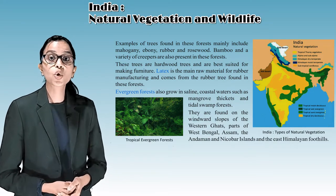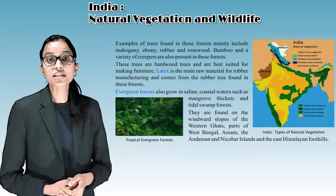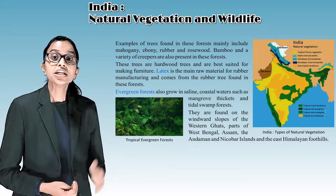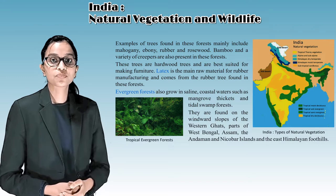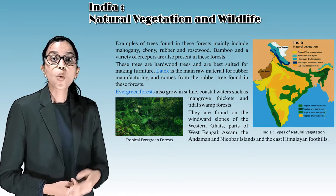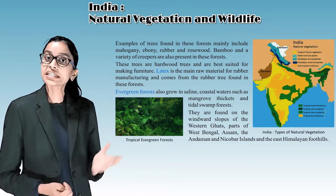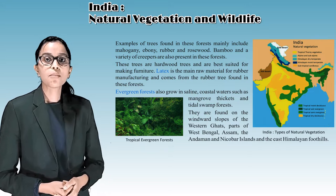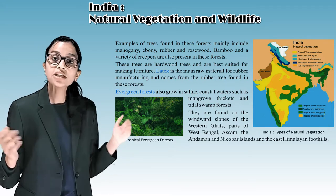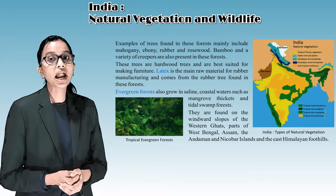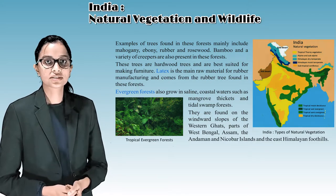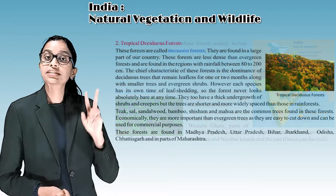Evergreen forests also grow in saline coastal water such as mangrove thickets and tidal swamp forests. They are found on the windward slope of the Western Ghats, parts of West Bengal, Assam, the Andaman and Nicobar Islands, and the East Himalayan foothills.